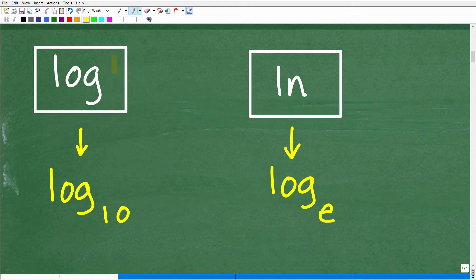Okay, so if you have a scientific or graphing calculator, what you want to do is identify these two keys. So we have the LOG key. Okay, that's the log button. Okay, a log function. And then you have this other one over here. This is the LN key.